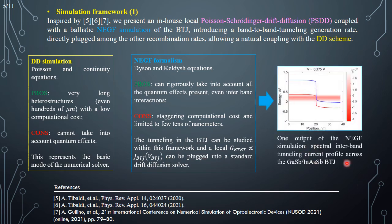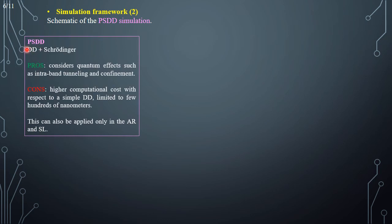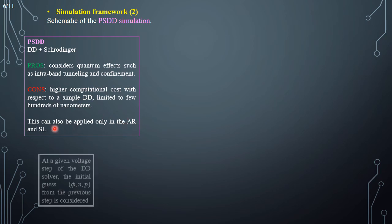This is an example of the outputs of the non-equilibrium Green's function simulation, representing the spectral current across the buried tunnel junction. The Poisson-Schrödinger drift-diffusion simulation is based on the drift-diffusion equations and on the Schrödinger equation. It can consider quantum effects such as inter-band tunneling and confinement. However, it has a higher computational cost with respect to a simpler drift-diffusion approach; therefore, it can only be used where it is needed, for instance in the active region and the superlattice.